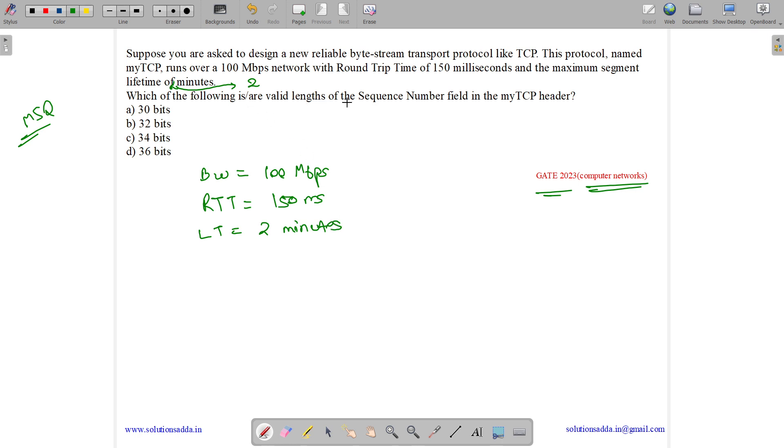Which of the following is a valid length of the sequence number field? So what is the length of the sequence number field of the MyTCP header? The options are 30, 32, 34, or 36 bits.